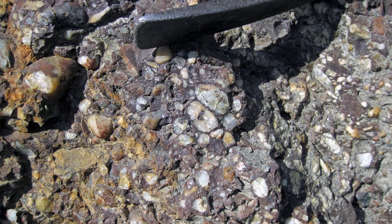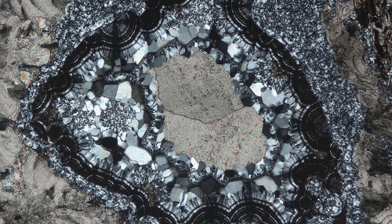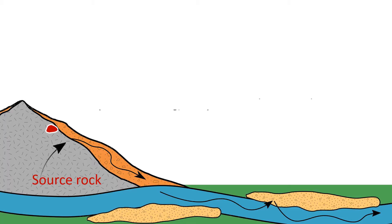To determine the origin of a terrigenous sedimentary rock, a geologist will study its grains and cements with two goals in mind. First and foremost, the geologist will work to identify the minerals that make up the lithic fragments and mineral grains. The composition of the lithic fragments and mineral grains tell us about the source rock – the bedrock that produced the sediment.